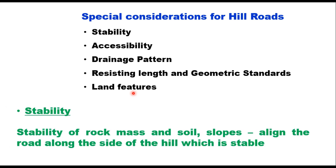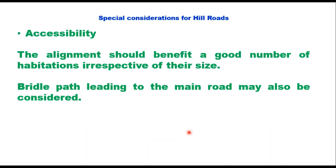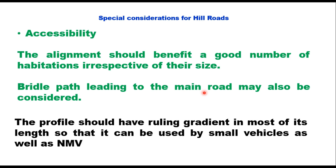Stability of rock mass and soil mass in hilly areas is one of the most important factors. It is important to examine the characteristics of these masses and align the road along the stable side of the hill. Accessibility in hilly terrain is difficult, so the profile should benefit a good number of habitations. Middle paths leading to the main road may also be considered, and the profile should implement rolling gradient so it can be used by small and non-motorized vehicles.